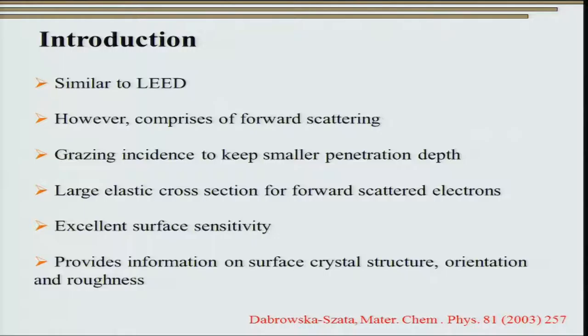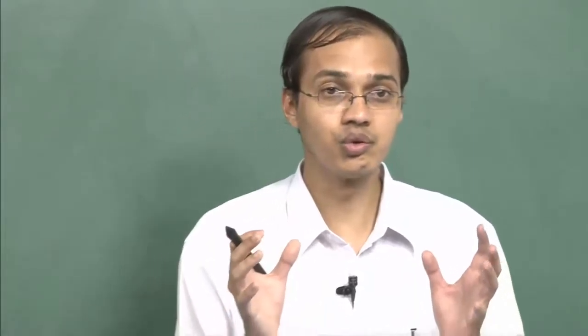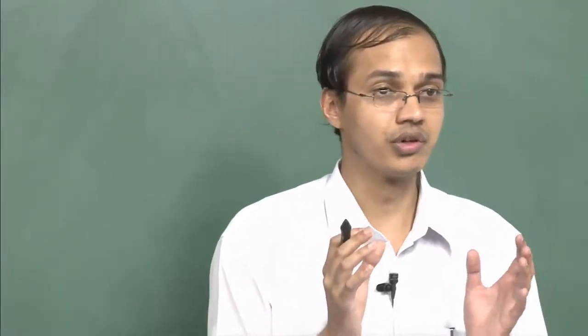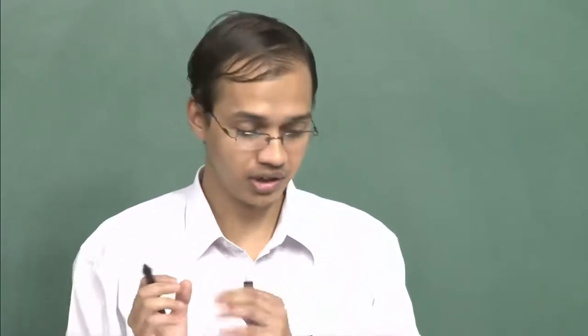Talking about forward scattered electrons, the major advantage is that it gives us a large elastic cross section. At the same time it gives us excellent surface sensitivity. That was precisely the reason why we had opted for grazing incidence small angle x-ray scattering over simple small angle x-ray scattering. We are going to use the geometry of grazing incidence to our advantage in reflection high energy electron diffraction.